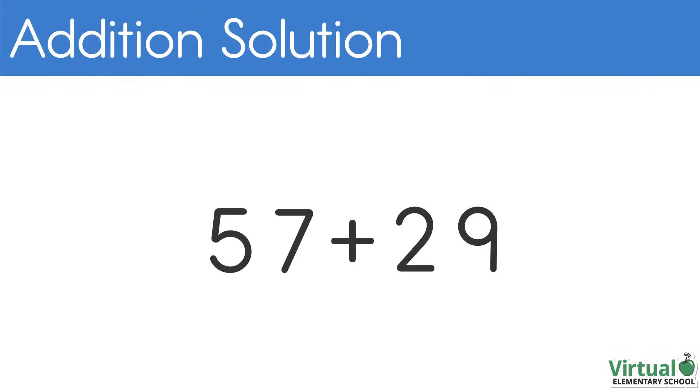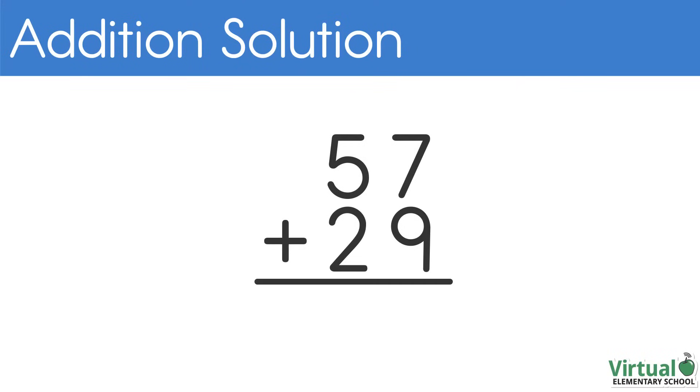Let's solve the addition problem 57 plus 29 by stacking the numbers so that the tens and ones are lined up. The tens place is on the left and the ones place is on the right.